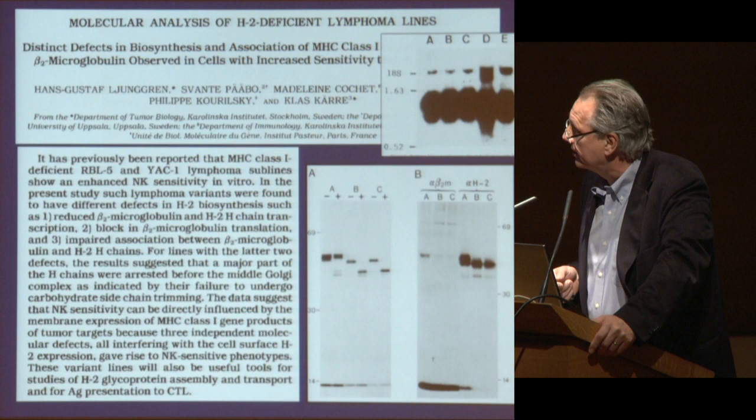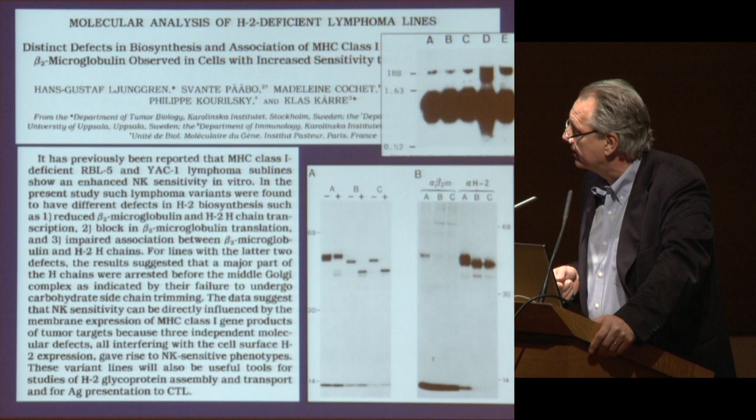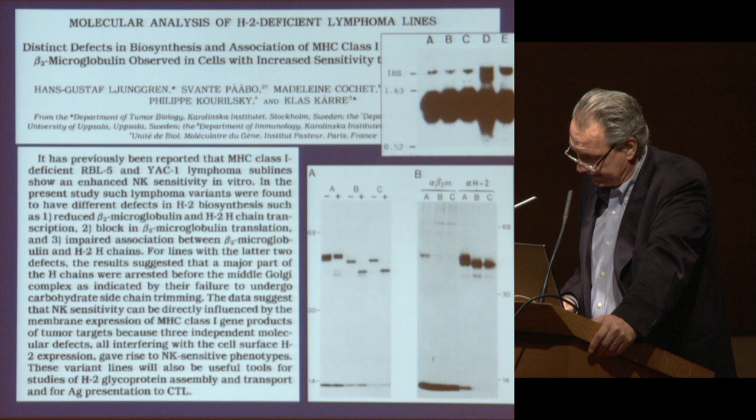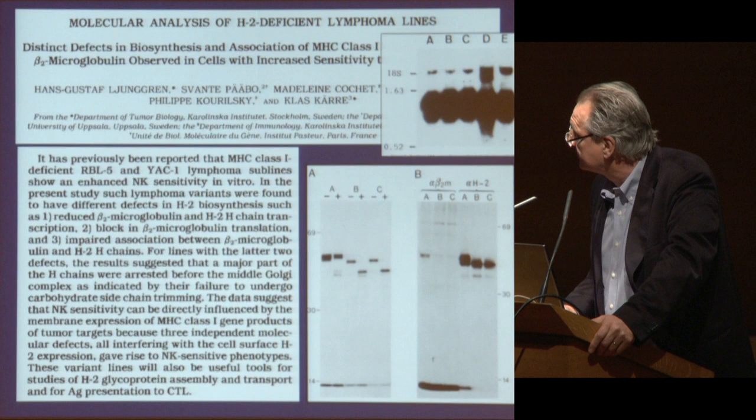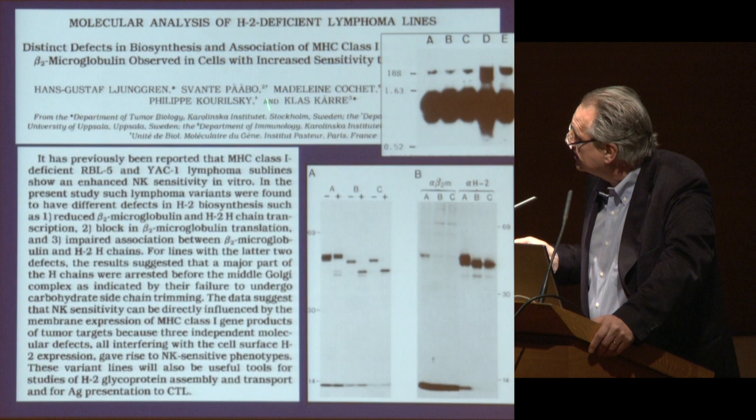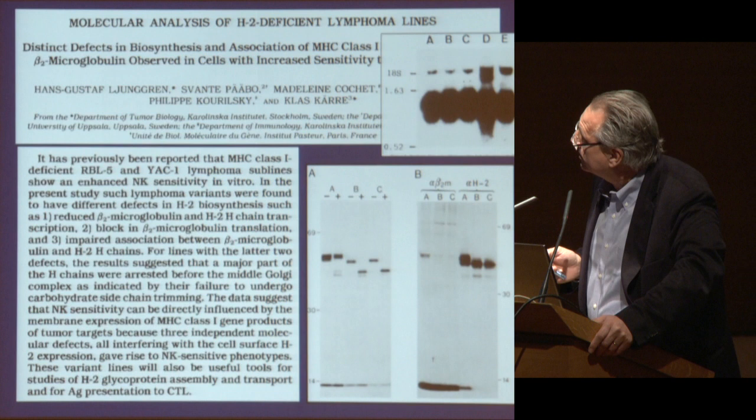One additional point from this old nostalgia: Hans-Gustav Ljunggren, who was also a collaborator here and my first brilliant student, is now actually leading a translation unit where they are, as we speak, infusing NK cells according to the missing self principle. So we have really come to a situation where we have gone from mice to men, from bench to bed. Interestingly, there is another collaborator here more well known for other things — Svante Pääbo — and I want to comment on his career as well.